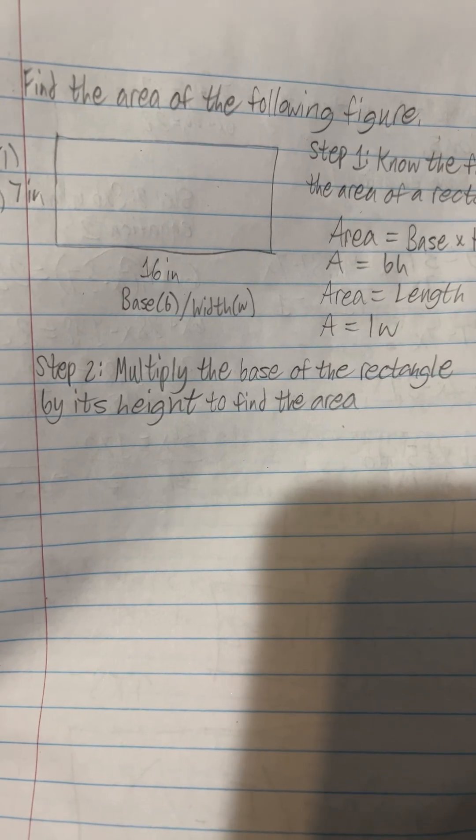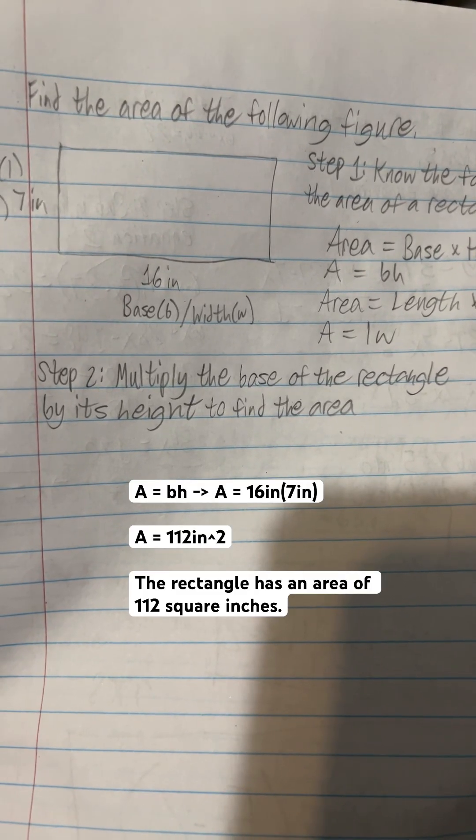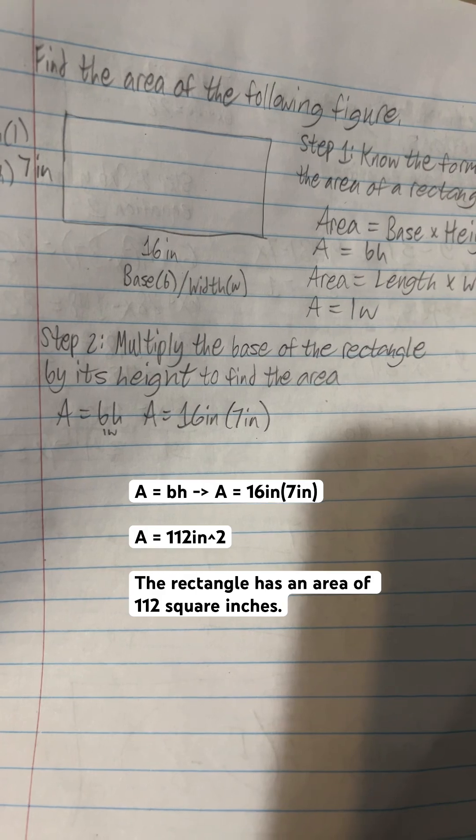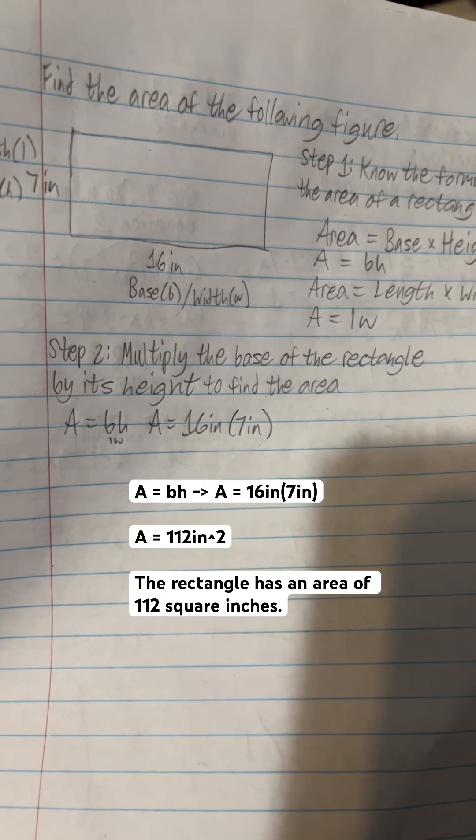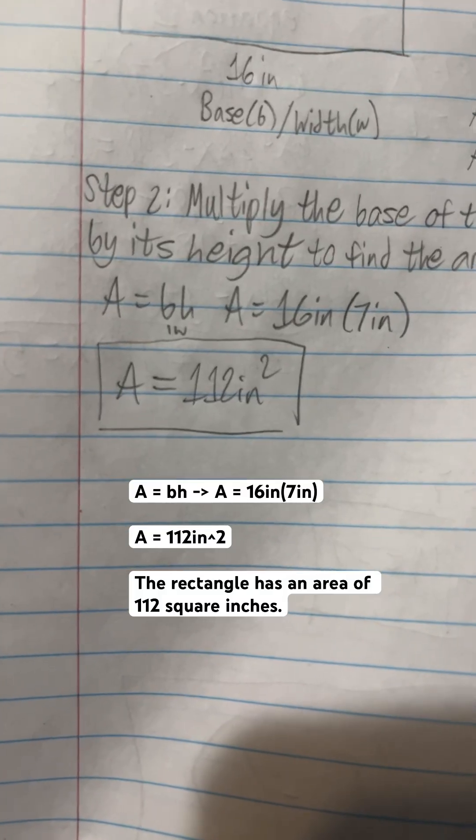Step two is to multiply the base of the rectangle by its height to find the area. The area of this rectangle is 16 inches times 7 inches. The area of the rectangle is 112 square inches.